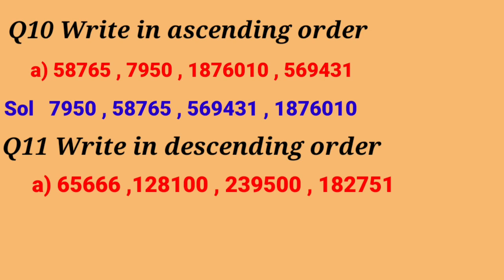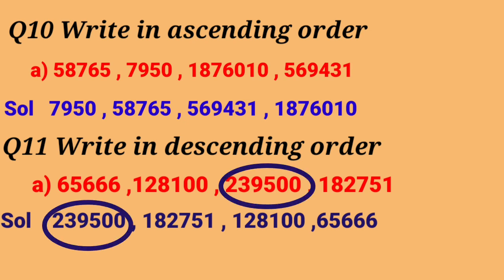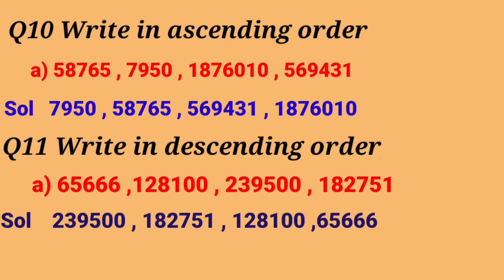Now we will compare the last 3 numbers. Let's see the extreme left digit of these numbers: here 1, here 2, here 1. So the greatest one is 2, which means the greatest number is 2,39,500. Next, we compare the remaining two numbers — their extreme left digits are the same, so we compare the digit to the right: here it is 2, here it is 8. So the next number is 1,08,2751, after that 1,28,100, and then at last 65,666.